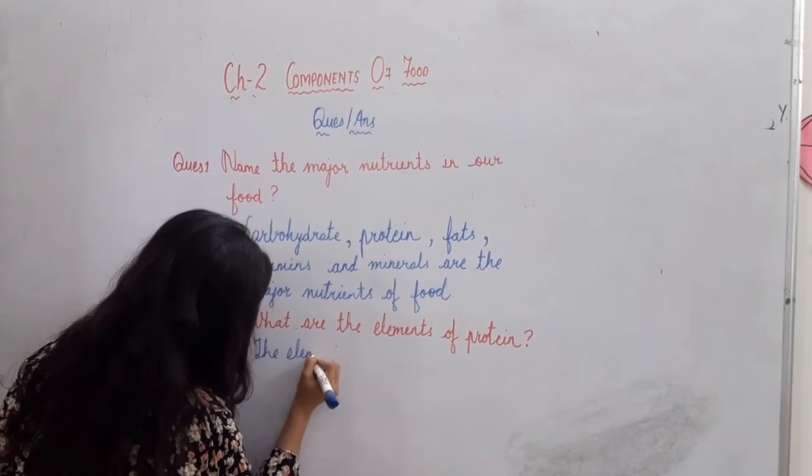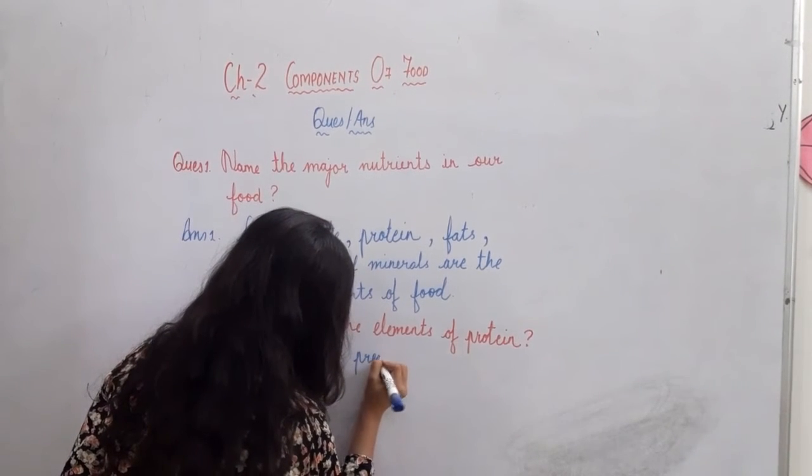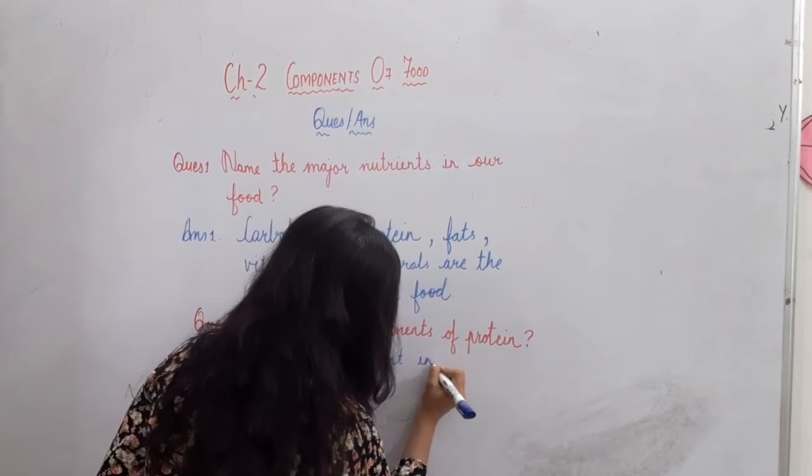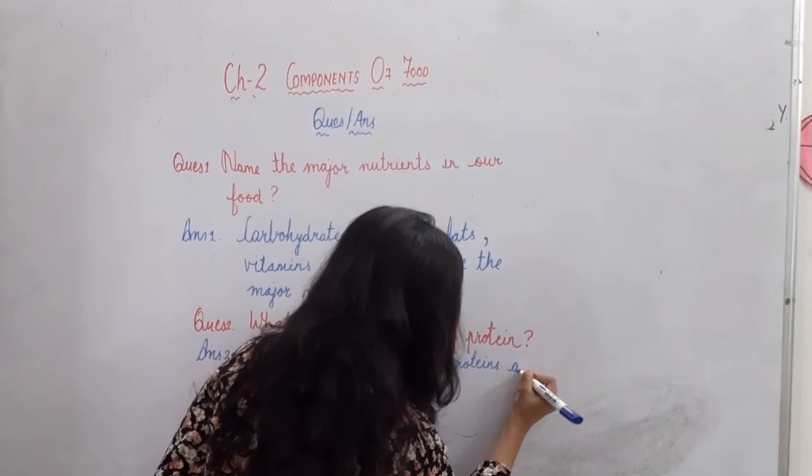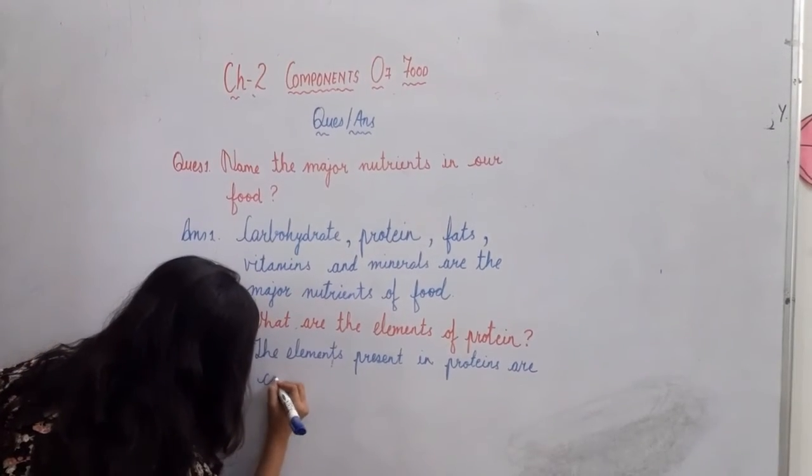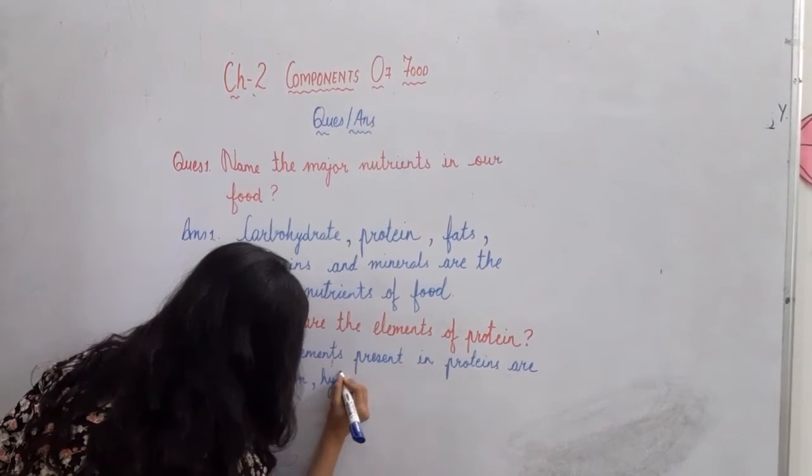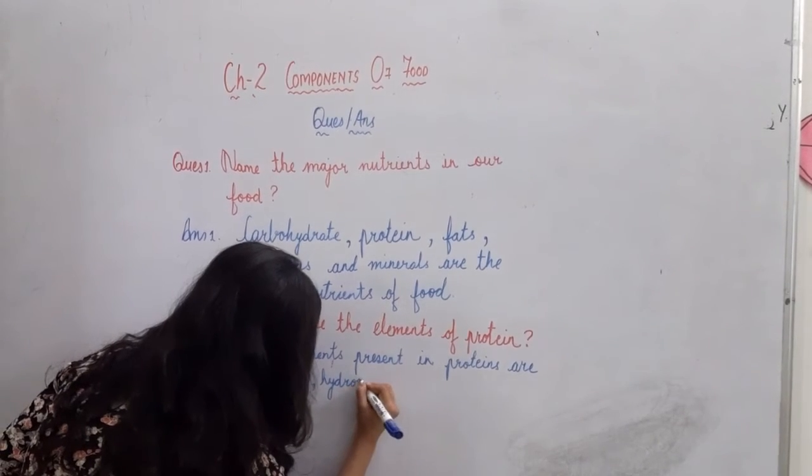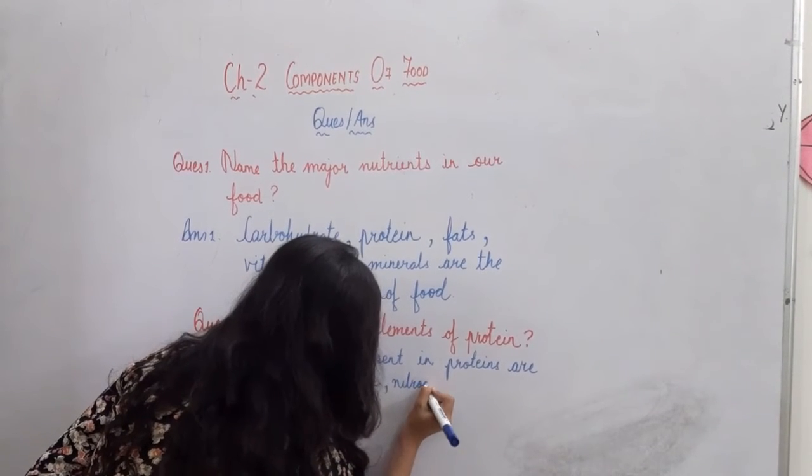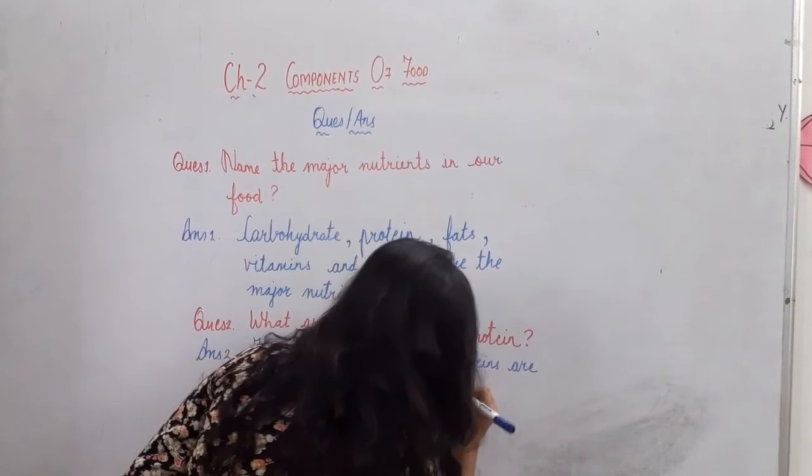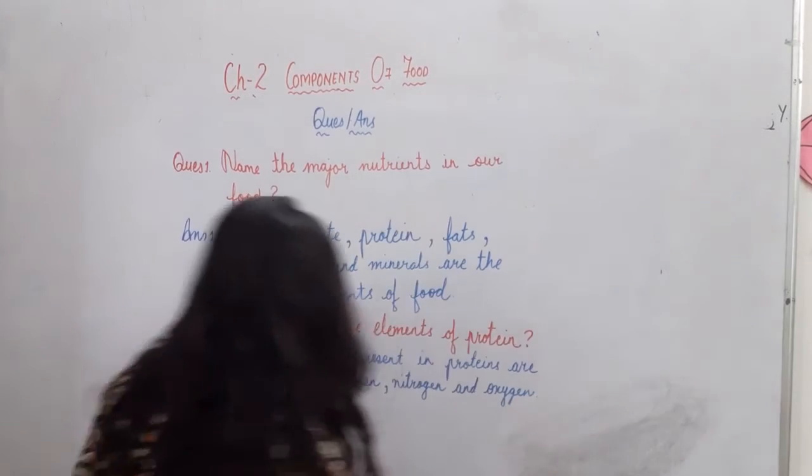Let's write it down. The elements present in proteins are carbon, hydrogen, nitrogen and oxygen. First stop.